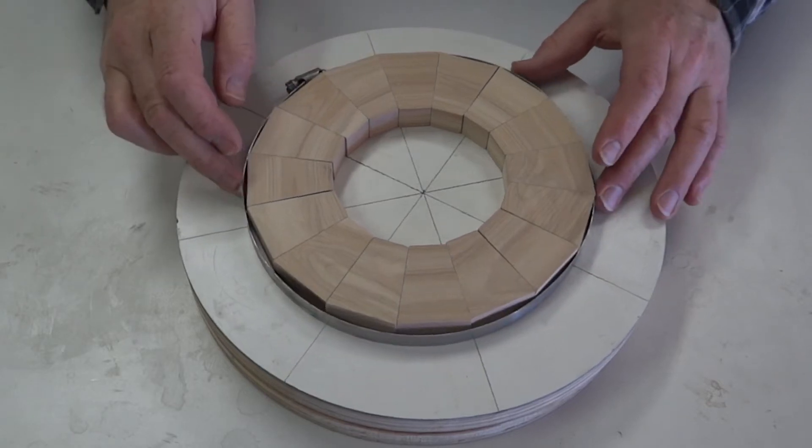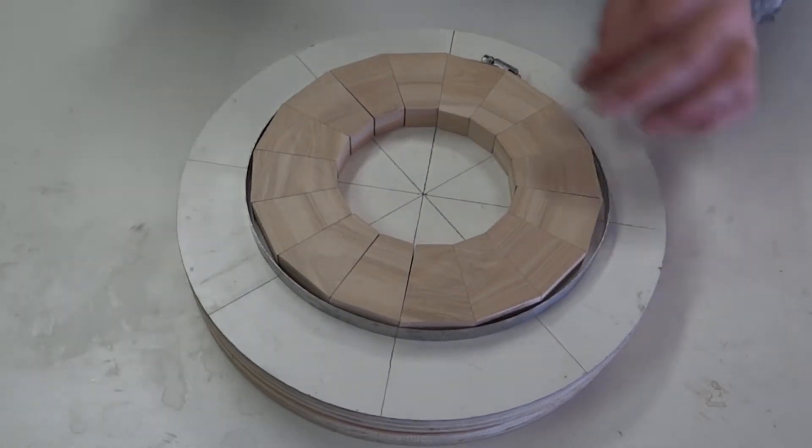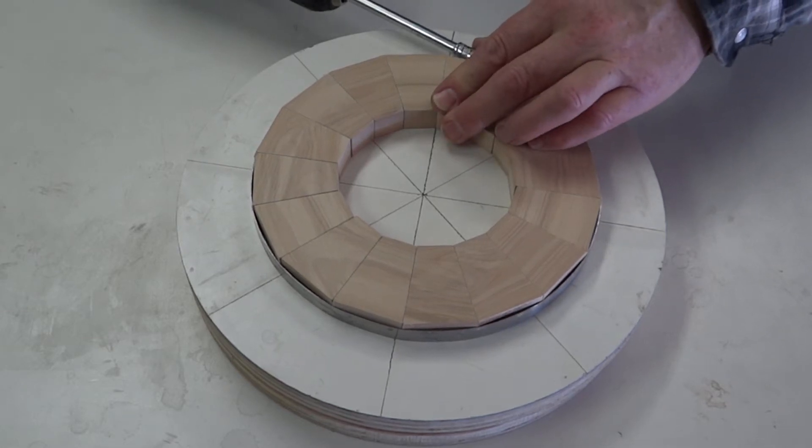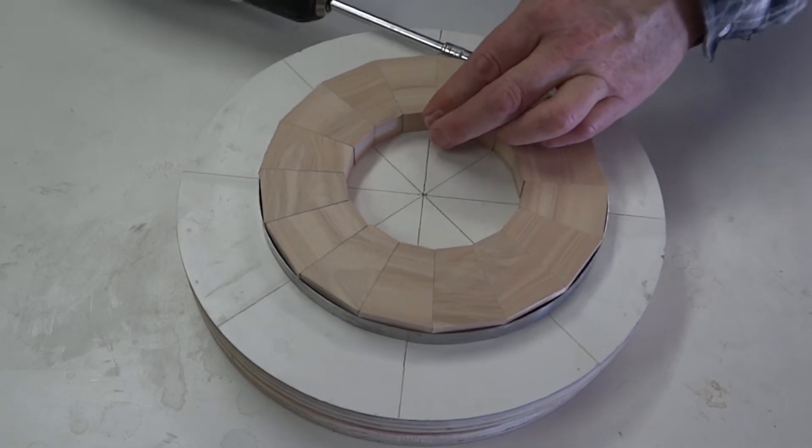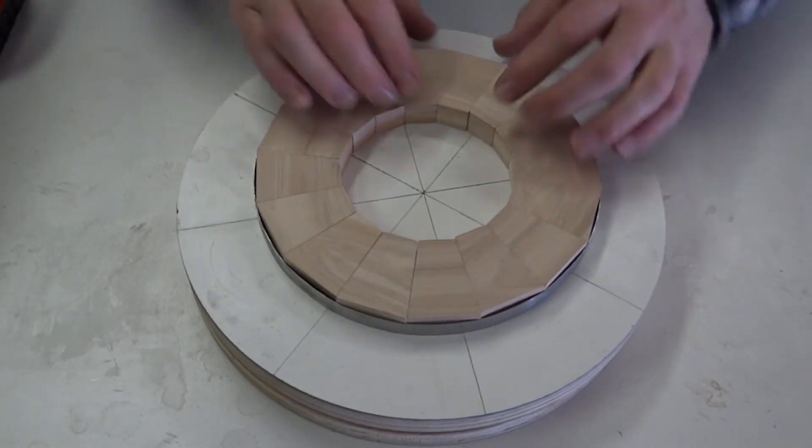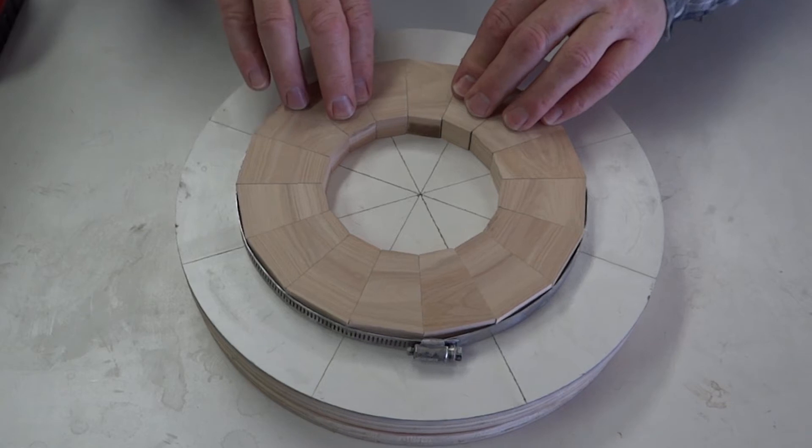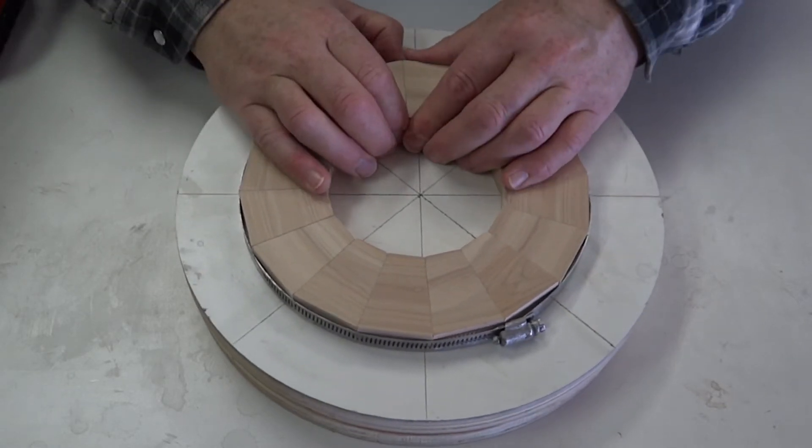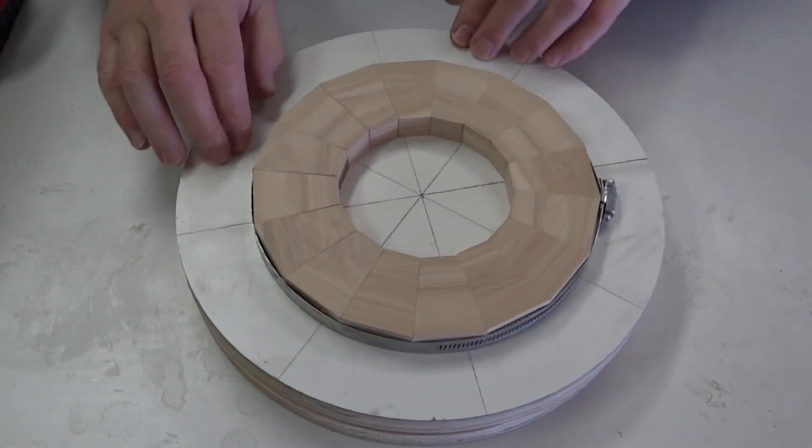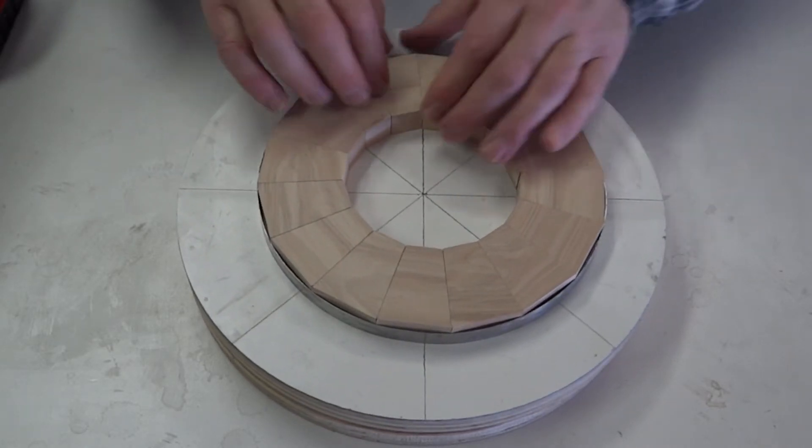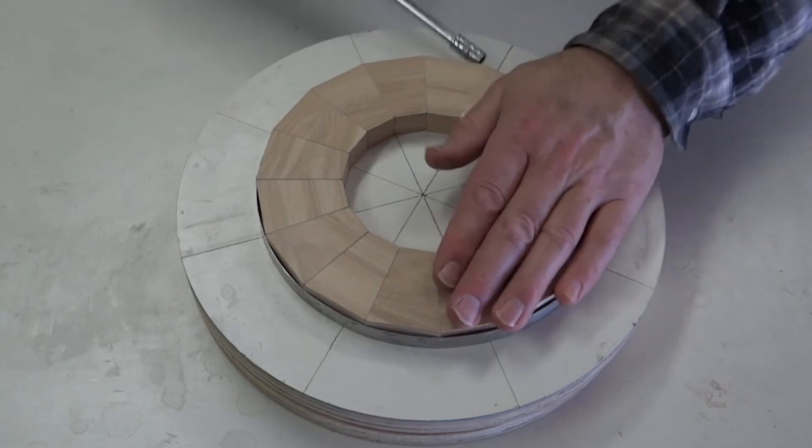I use hose clamps to tighten the ring of segments together. It's important to make sure that all of the segments line up properly, that none of them are sticking out a bit too far.